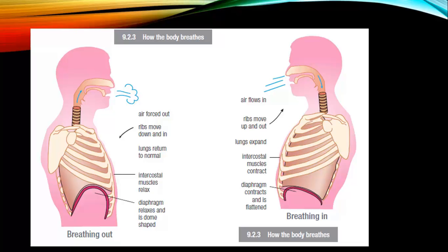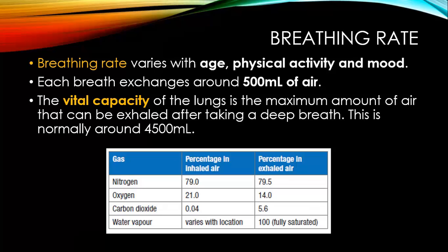This diagram shows, towards the bottom, a representation of the diaphragm when you are breathing in and breathing out. You can see how it changes up and down, allowing for that inhaling and exhaling of gases. Breathing rate varies with age, physical activity, and mood. Each breath exchanges about 500 mils of air. The vital capacity of the lungs is the maximum amount of air that can be exhaled after taking a deep breath, which is normally around 4,500 mils.